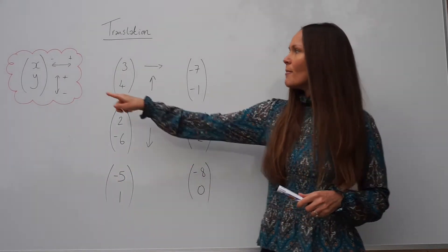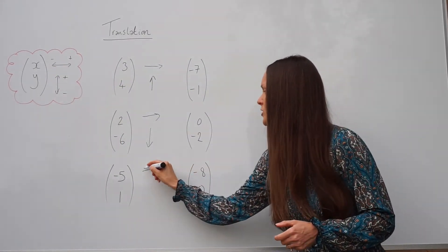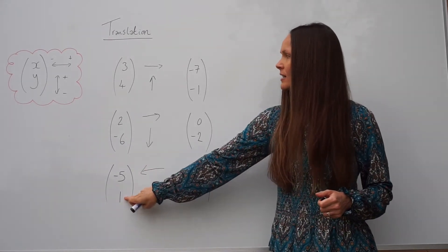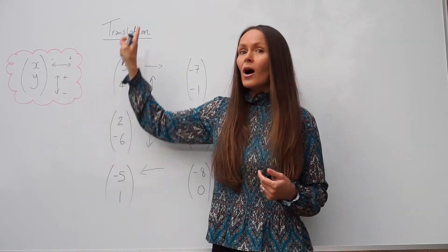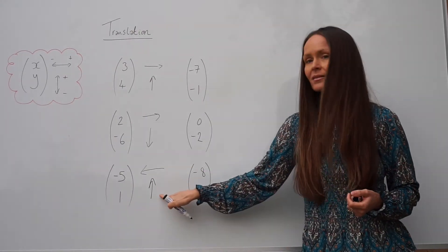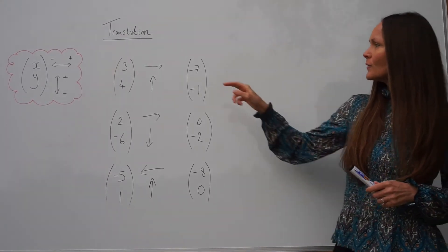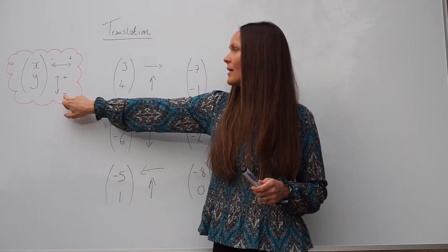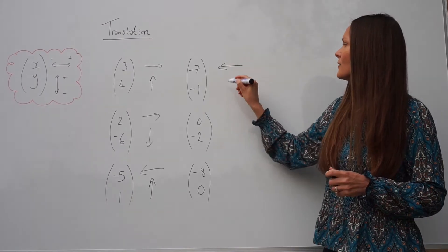Next, negative five and positive one. The top number is negative, so it moves to the left — five units to the left. The bottom is positive, so it moves up — one unit up. Then we have two negatives: negative seven and negative one. Negative on top means to the left, negative underneath means down — so seven units to the left and one unit down.